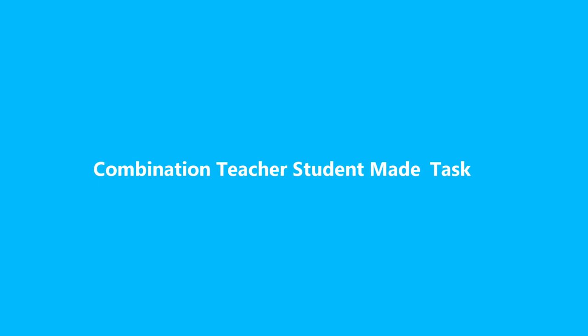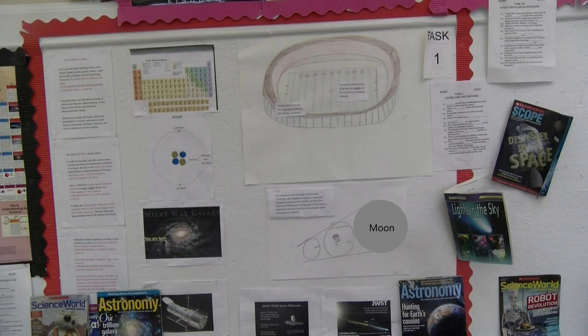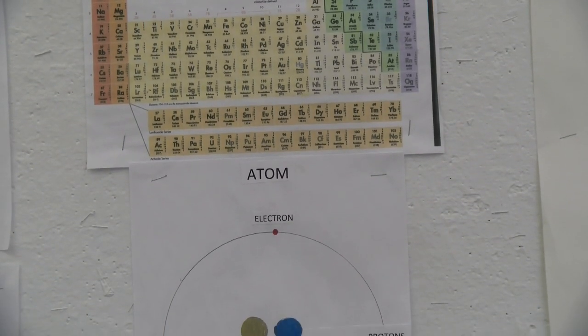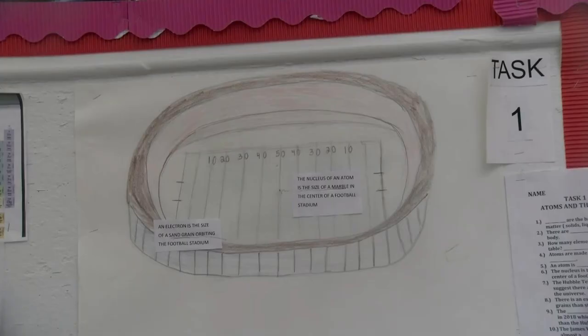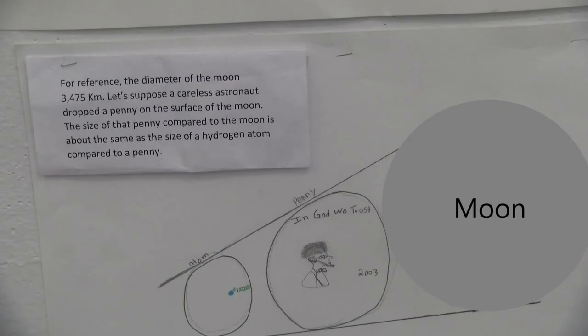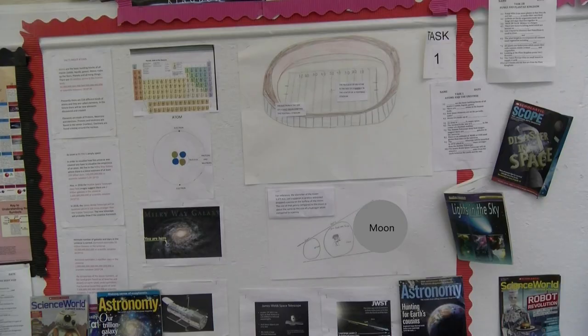Combination student-teacher tasks — two examples. First example: facts about atoms. The teacher shows an illustration of a periodic table and parts of an atom. The student takes it one step further and draws a football stadium to represent an atom, then places the atom's masses — represented by a marble — on a 50-yard line and sand grains in the stands to visually illustrate that the atom is 99.99% empty space. Another student drawing of the atom alongside a penny and moon illustrates that if a hydrogen atom were the size of a penny, a penny would be the size of the moon. This task helps the student visualize the emptiness of the small atom, which is knowledge needed when later visualizing the way stars over their life cycle produce elements.